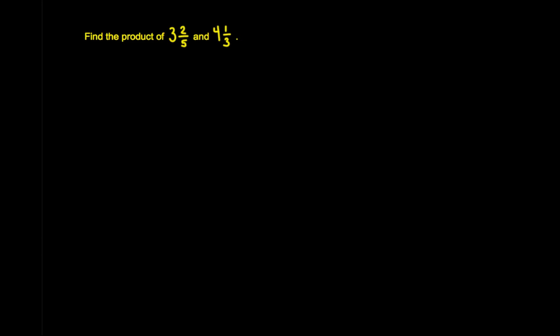Hey mathematicians, welcome to this video on multiplying mixed numbers. Today we're being asked to find the product, and the product is the answer or number that you get after you multiply some set of numbers. So we're trying to find the product of three and two-fifths and four and one-third.